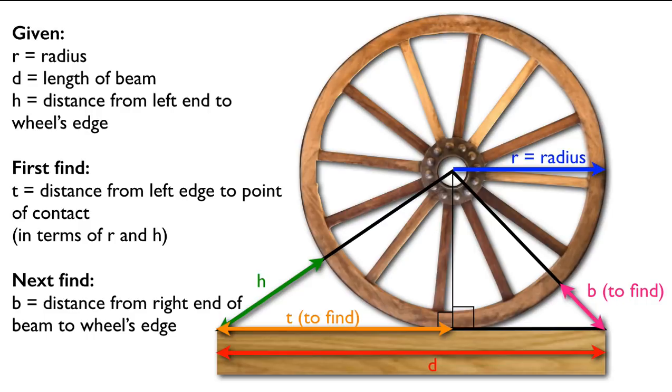So on the right-hand side, you're going to find B. That is the distance from the right side of the beam to the nearest point on the wheel. And you're going to find that in terms of R, H, T, and D.